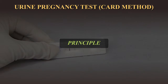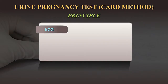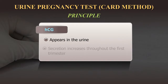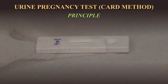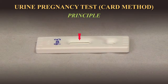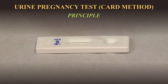When a woman becomes pregnant, her body produces a hormone called HCG, or human chorionic gonadotropin, which appears in the urine. The secretion of this hormone increases throughout the first trimester. HCG test utilizes the principle of immunochromatography on a membrane.